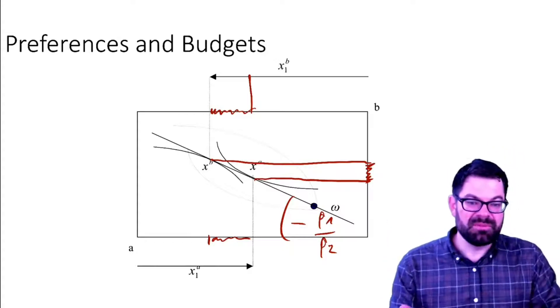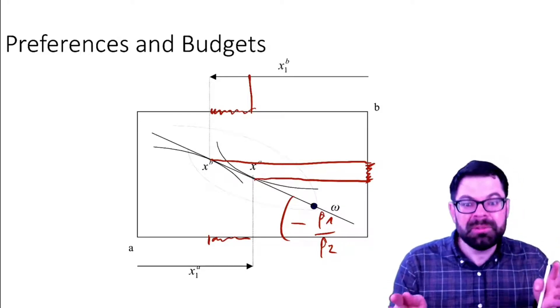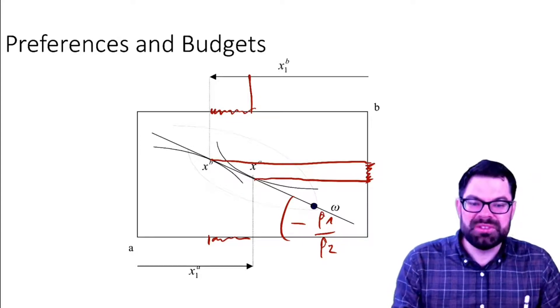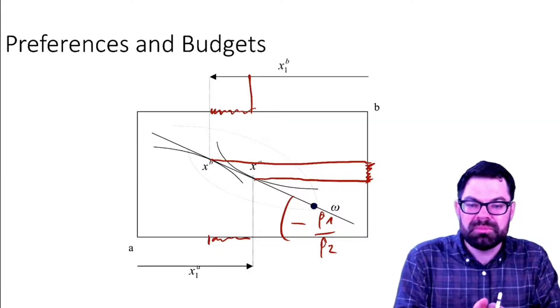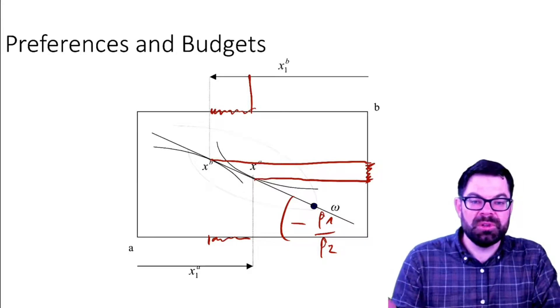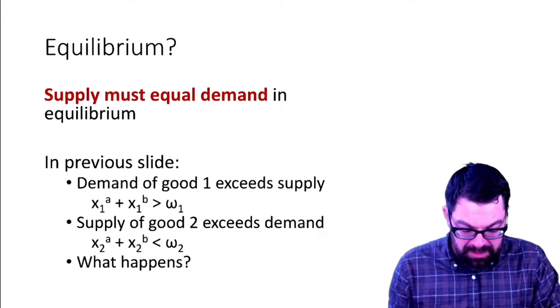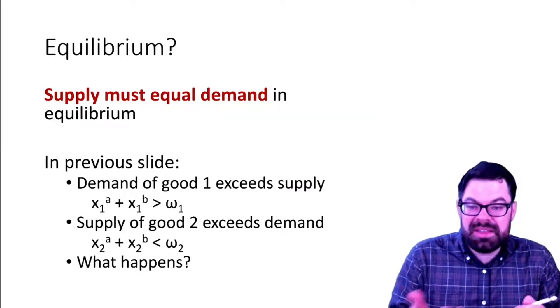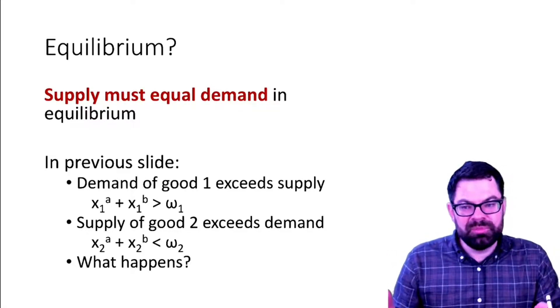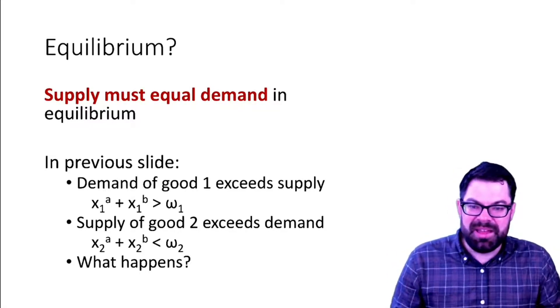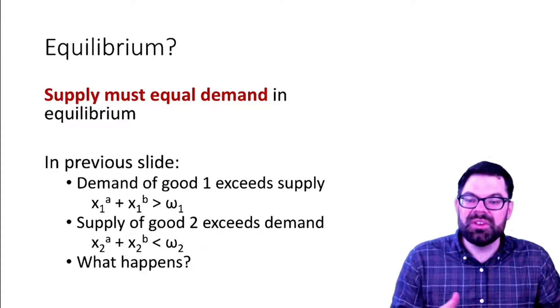So we have two goods, we have two prices, and at those prices people demand too much of one and too little of another. The next step is to think what has to happen to bring both of those into equilibrium, to have zero excess demand for one good and zero excess demand for the other, or zero excess supply for good two. In equilibrium, supply must equal demand.